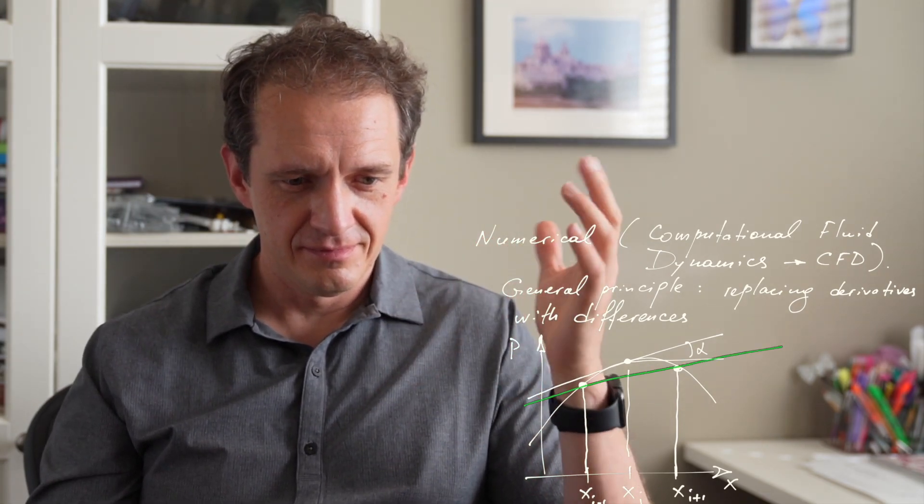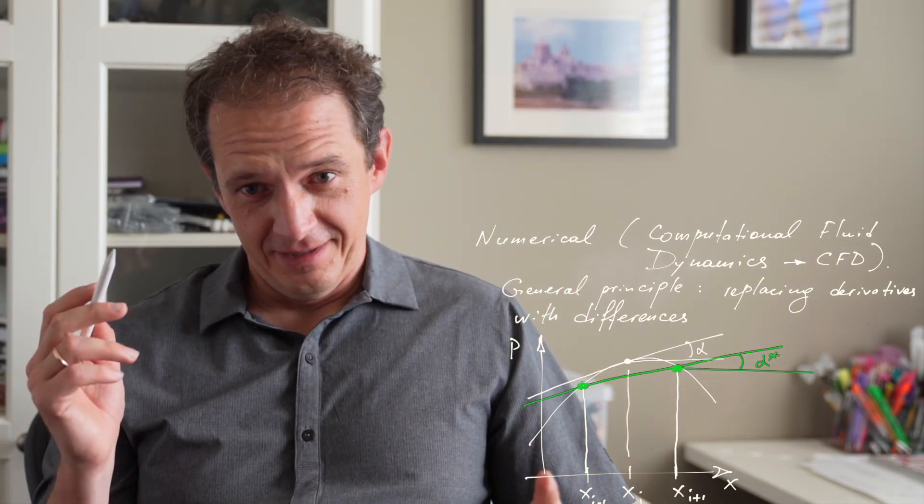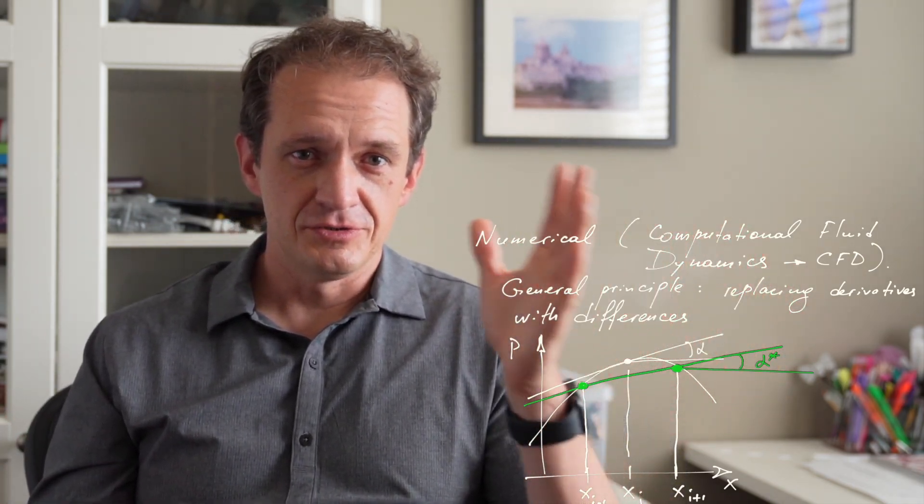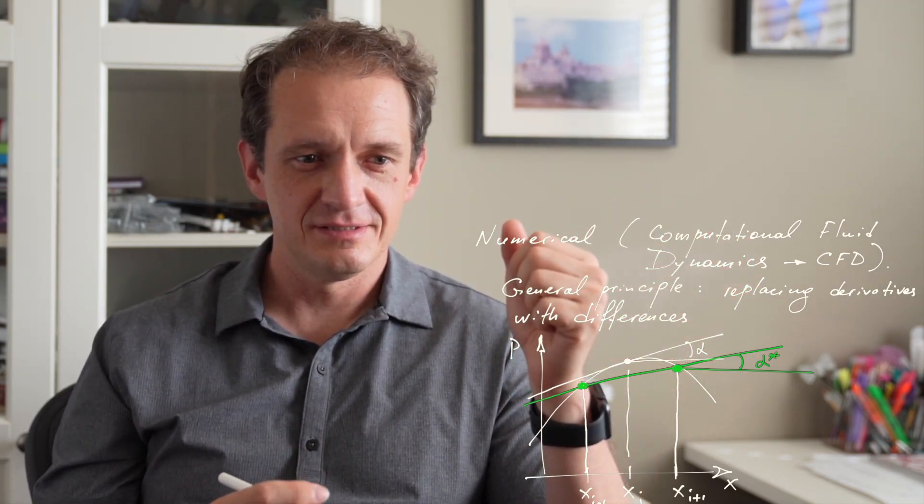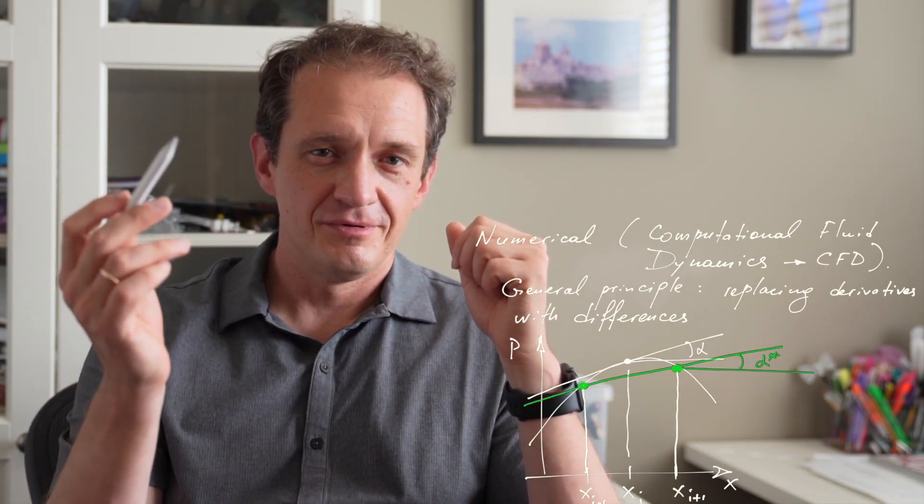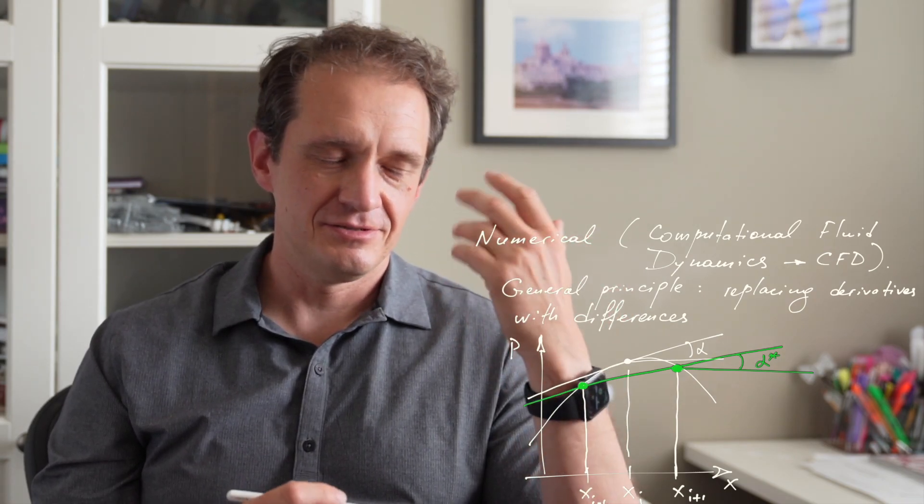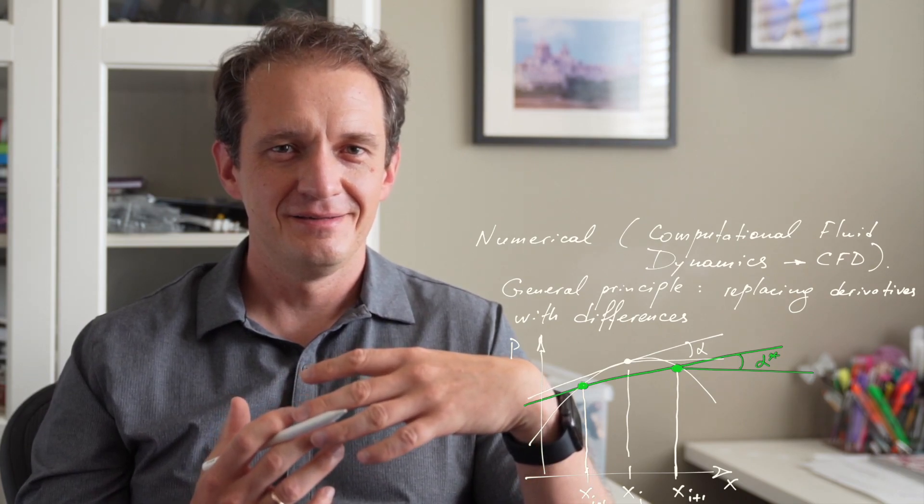We can discretize the domain, define points to the left and the right of the point of interest—call them x_i minus one and x_i plus one—draw a straight line through them, and take the slope of that line as an estimate of the derivative of the function at x_i. It goes deeper than that in practice, but the general principle is this: we trade a few partial differential equations for many equations that are much simpler. Each one is an algebraic equation with no derivatives involved, and this is what computers are good for—you can crunch numbers and solve many equations fairly efficiently.